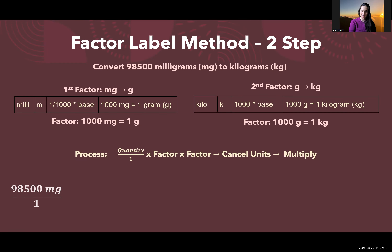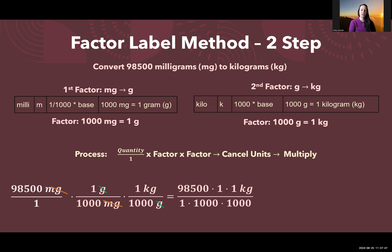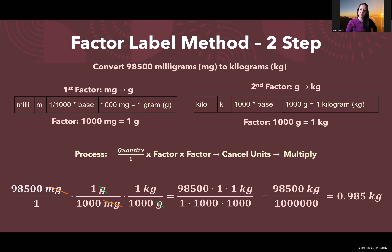Our quantity is 98,500 milligrams over one. Applying the first factor, one gram per 1,000 milligrams, ensures we have a top-bottom pair to cancel milligrams, leaving us with grams. Then applying the second factor, one kilogram per 1,000 grams, cancels grams and gives kilograms. Multiplying straight across: 98,500 times 1 times 1 over 1 times 1,000 times 1,000. That's 98,500 divided by 1,000,000, which equals 0.0985 kilograms — our final answer.